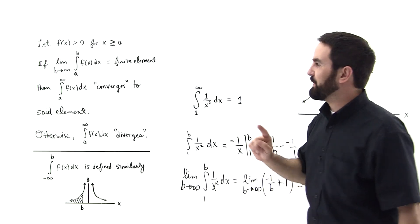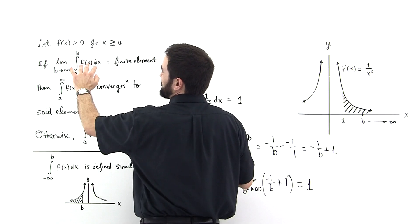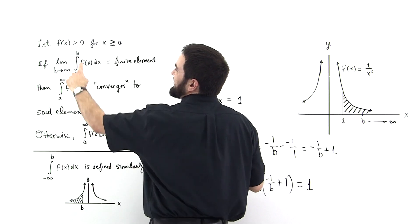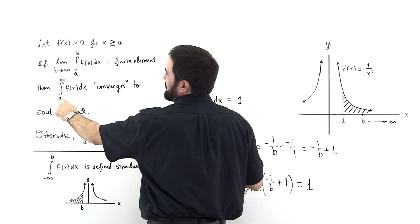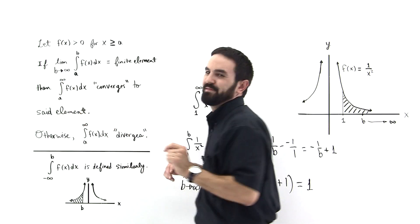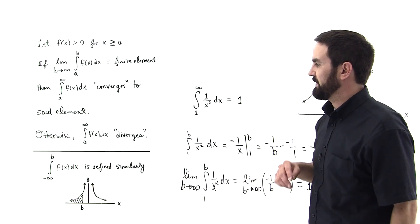It's subtle, but notice the difference between this thing and this thing. This is the limit as b goes to infinity, and this goes from a to infinity. It's a subtle mathematical subtlety.